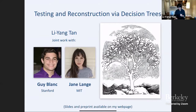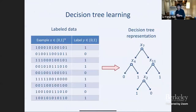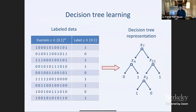Let's get started. This is about testing and reconstruction — two tasks that are closely related to learning. I'll start by talking about decision tree learning, a very well-studied and basic problem. Given labeled data x-y pairs, our goal is to generate a decision tree that represents this data — or in learning theory terms, the function that labels the data. This is an extremely basic and well-studied algorithmic task.